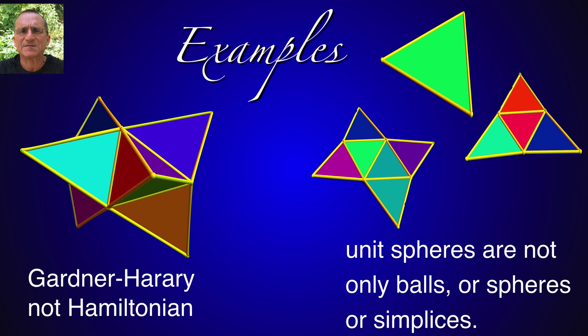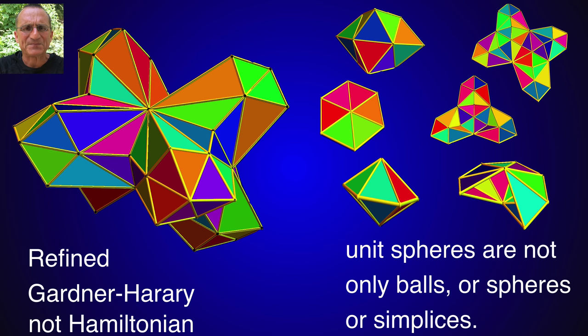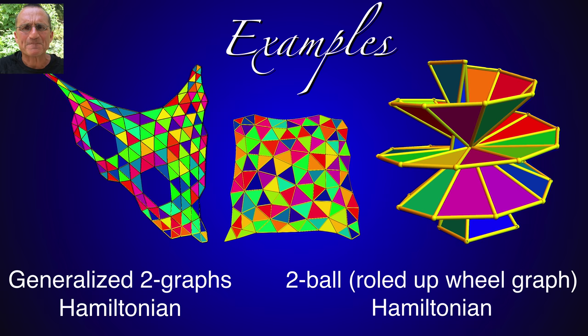So again the Gardner-Harary graph, you take this Avicii graph and then stellate it. And then if you look at the unit spheres they are not balls or spheres or simplices. They are only generalized balls. And also for the barycentric refinement we still don't have a manifold structure. There are still unit spheres which are not balls or spheres or simplices. That's here the obstacle for Hamiltonian property.